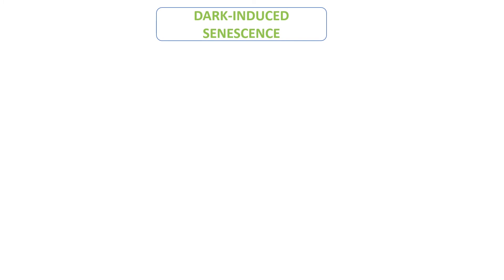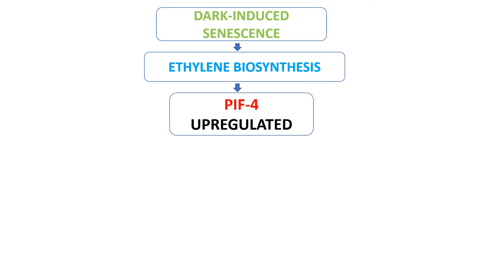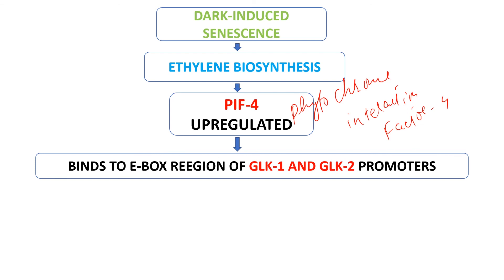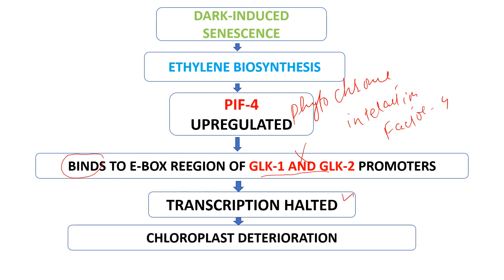The second type is dark-induced senescence. This involves ethylene biosynthesis and the gene PIF4 — Phytochrome Interaction Factor 4. PIF4 binds to the E-box region of GLK1 and GLK2 promoters. Since GLK1 and GLK2 are chloroplast maintainers, binding of PIF4 to their promoters inhibits their transcription. As a result, chloroplast maintenance is disrupted, chloroplast deterioration begins, and this leads to leaf senescence.